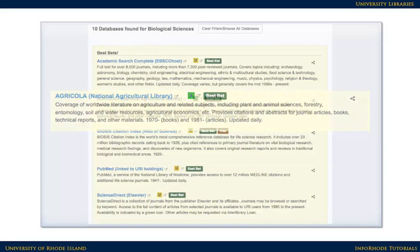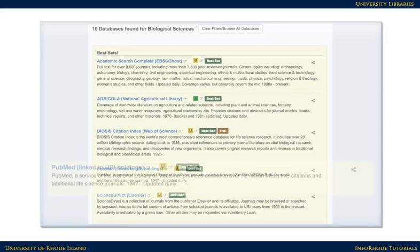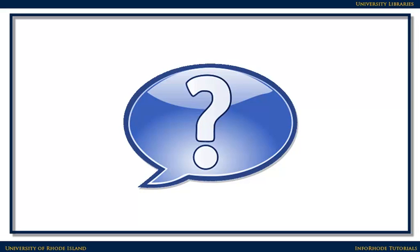Also look at the dates covered. Some databases might not cover recent materials, or they might not include older articles you might need for your research. Try your search in a few different databases and compare the results. If you're not getting the results you'd like, or you'd like some assistance in choosing a database, please feel free to contact a librarian.